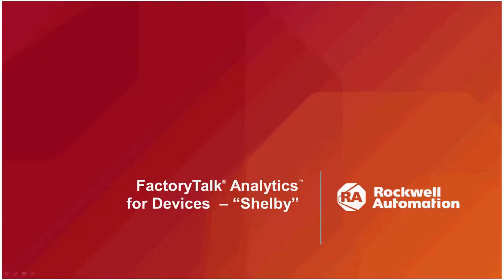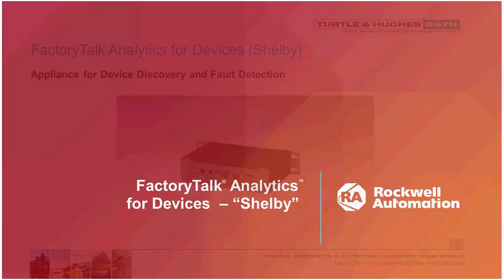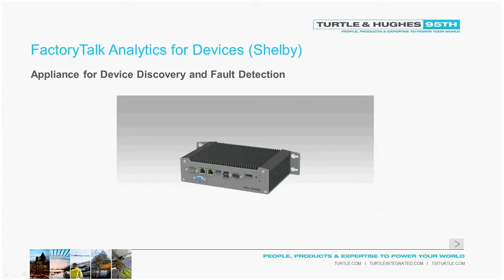Now let's hop into Factory Talk Analytics for Devices, or Shelby for short. Here's a picture of the Shelby appliance, which is designed for device discovery and fault detection. All that's needed to operate Shelby is a 24-volt DC power source and a connection to your Ethernet network with connected devices like drives, controllers, and managed switches. There are two Ethernet ports on the appliance so you can connect to two different subnets.